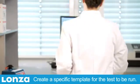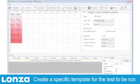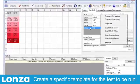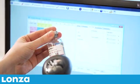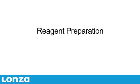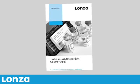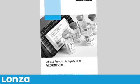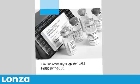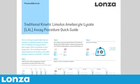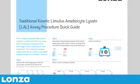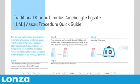Start by creating a specific template for the test to be run with our Win KQCL software. The software is designed such that it guides you intuitively through the setup process. The Pyrogent 5000 LAL assay package insert and quick guide provide complete, easy-to-follow instructions for performing the assay. In this assay demonstration, we are going to perform a routine test that could be used for product release.